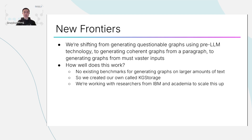This begs the question: how well does all of this work today? Because progress has been so fast, there are no existing benchmarks for generating graphs on large amounts of text — that previously wasn't possible. I've done a lot of searching, and researchers I know have also done a bunch of searching. We haven't found any yet — if you do know of any, please get in touch. For this reason, we created our own at UNICE called KGStorch.